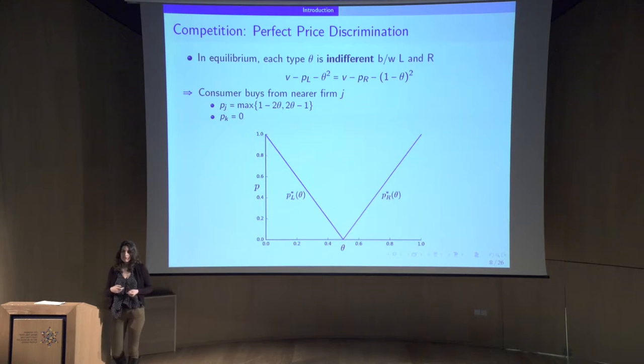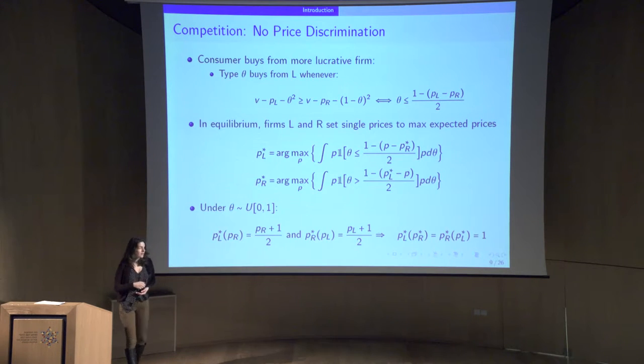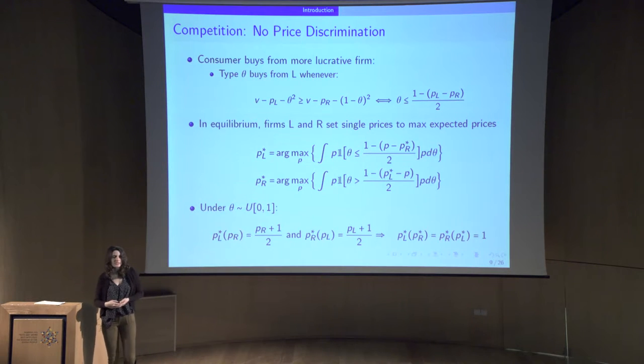In equilibrium, it must be that they compete over type theta to the very core. This is Bertrand competition. Each type theta must be indifferent between buying from firm L at price PL and firm R at price PR. It's not too difficult to show that in the unique undominated equilibrium, type theta will buy from the firm that's closer to him at a price that's either 1 minus 2 theta or 2 theta minus 1.